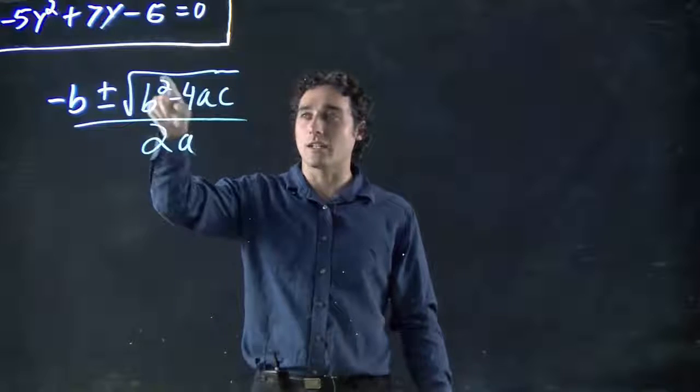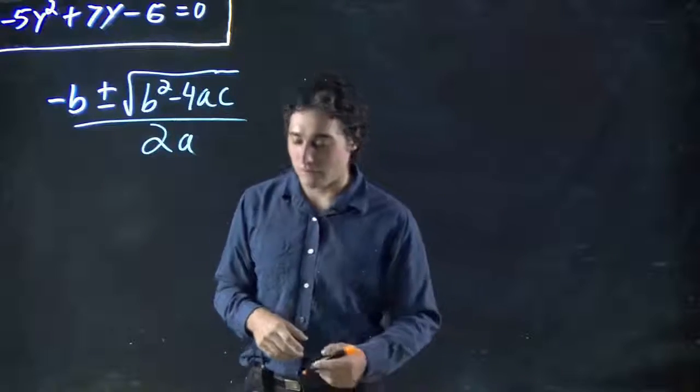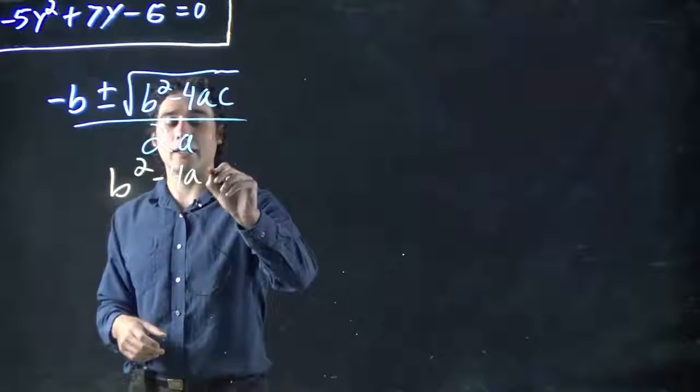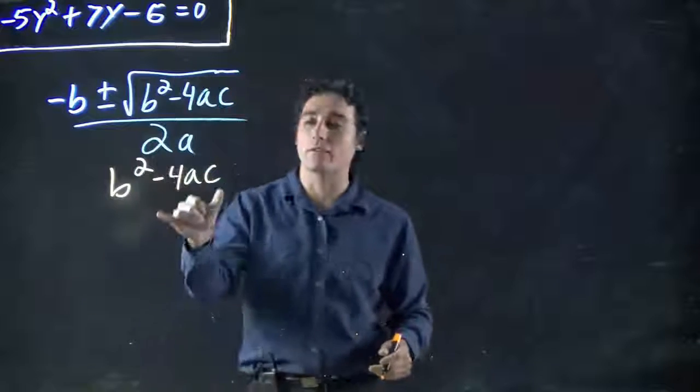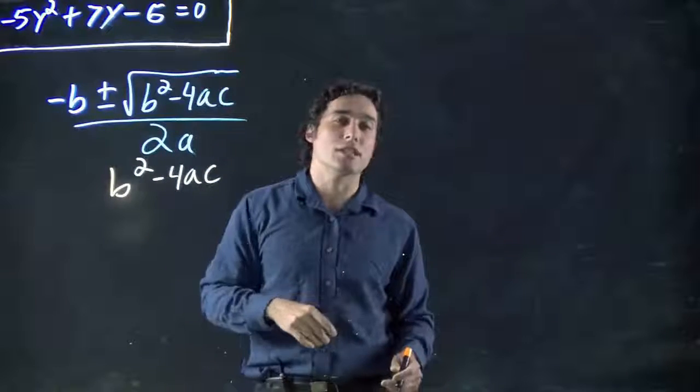Now this right here in the square root of our quadratic equation, that is the discriminant. Our b squared minus 4ac - to determine if we have roots we use this. So let's look at the example we just did.